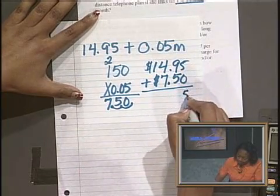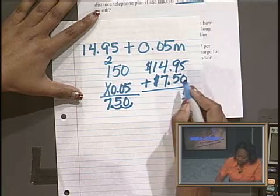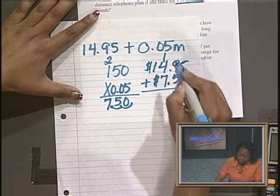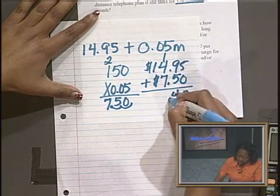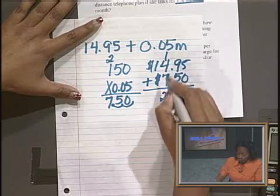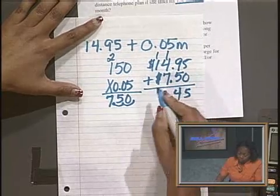So we're going to add that up. 0 plus 5 is 5. 9 plus 5 is 14. Carry the 1. Bring down my decimal. 1 plus 4 is 5. 5 plus 7 is 12. Carry my 1. 1 plus 1 is 2.